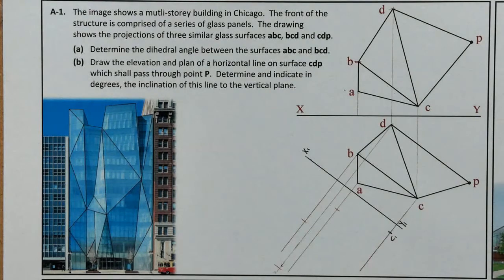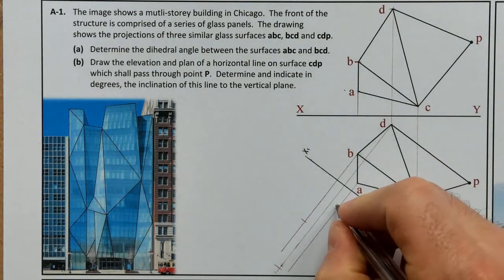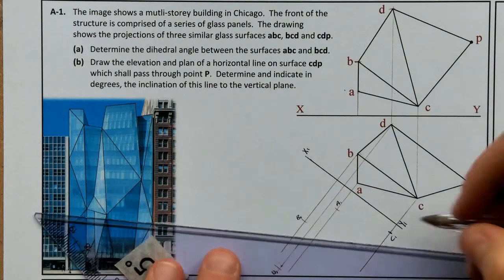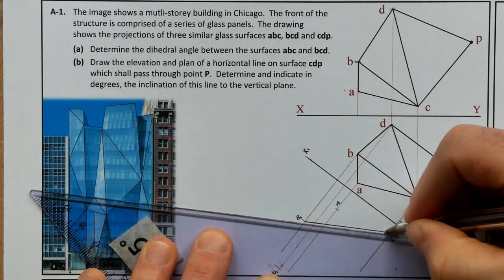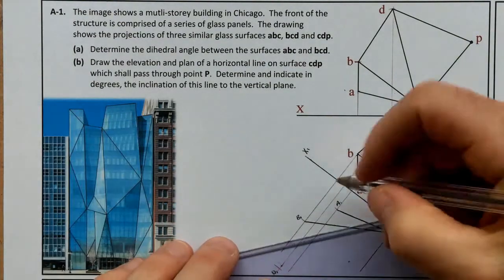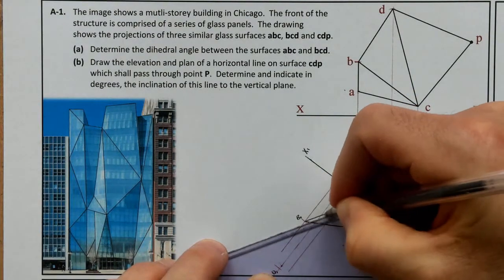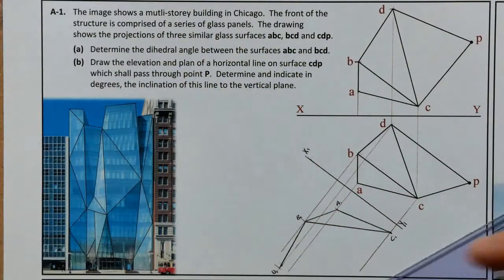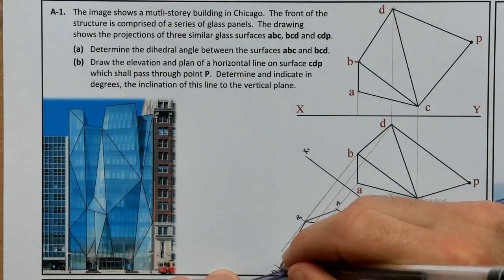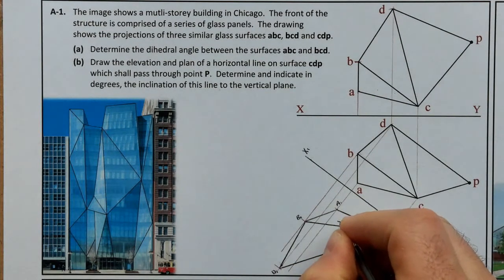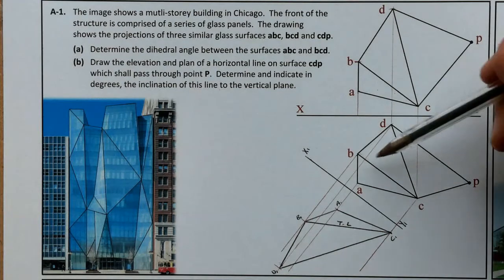There we have it: A1, B1, and D1. I know that the line B1 to C1 is a true length. Now I'm going to complete those surfaces — A1, B1, C1, and B1, C1, D1 — because I've done an auxiliary view called X1, Y1. What's important is that here the line B1 to C1 is now a true length.